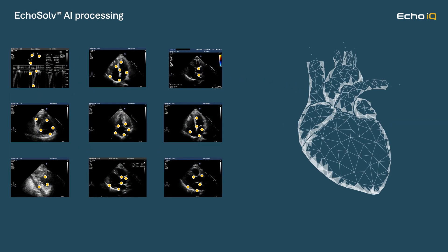Echosolve uses the power of AI in a different way when assessing ECHO studies. Instead of looking at a single view for the purpose of disease detection, we look at all the measurement outputs, regardless of whether they are captured by a human or AI system, from all views taken in an ECHO study. This gives us a very wide range of data to use to feed the model.